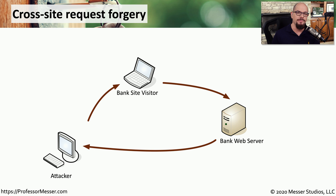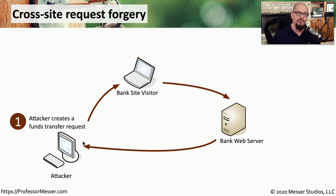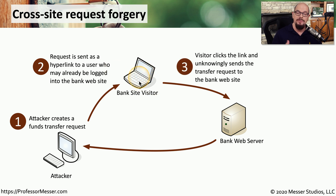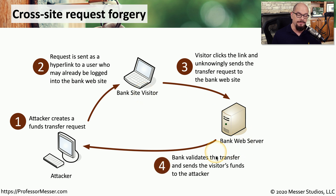Here's an example of a cross-site request forgery that takes advantage of a client's browser. We'll start with an attacker communicating with a visitor to a bank site's web server. The attacker is going to create a request that takes advantage of the bank site visitor's browser and send them that request — maybe as a hyperlink inside an email — wanting the client to click on that hyperlink to perform the forgery. The attacker is hoping the user is already logged into the bank site's server. When they click that link, it sends the request, sometimes without the user even realizing it, to the bank's web server. Because this user is logged in properly, the request is performed as if it's coming directly from the bank site's visitor. If this request is a funds transfer, then the bank web server transfers the funds to the attacker, pulling it out of the visitor's account, and the request forgery is complete.